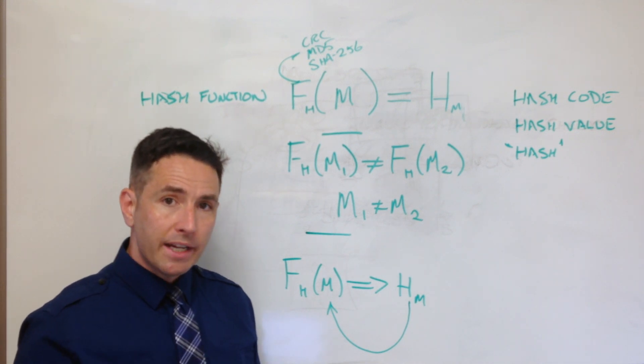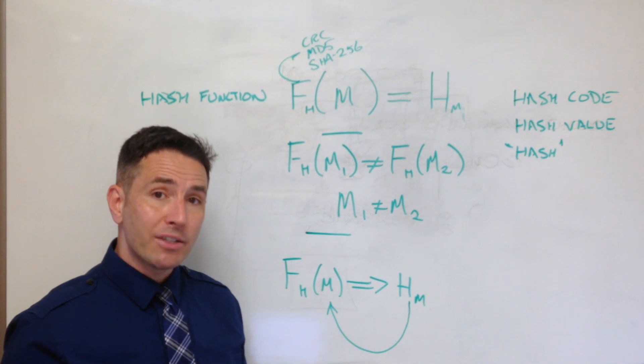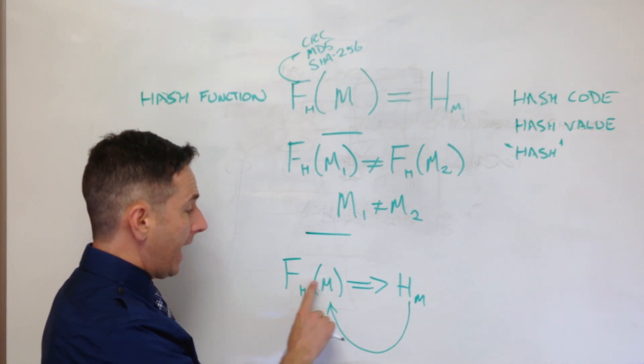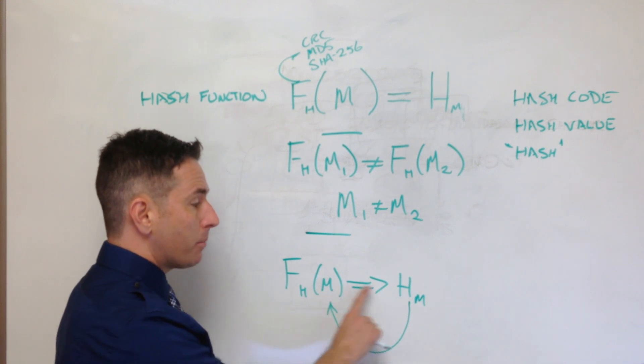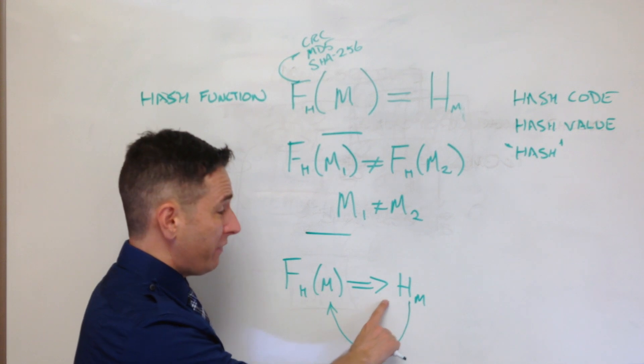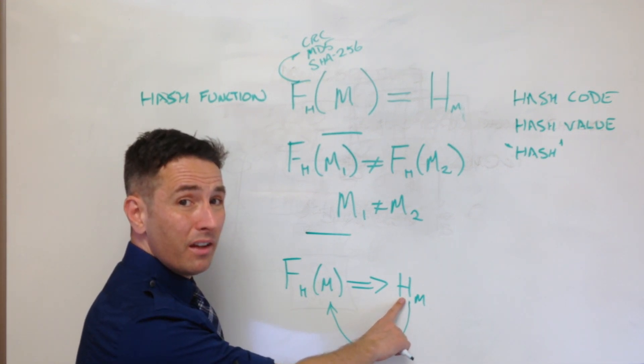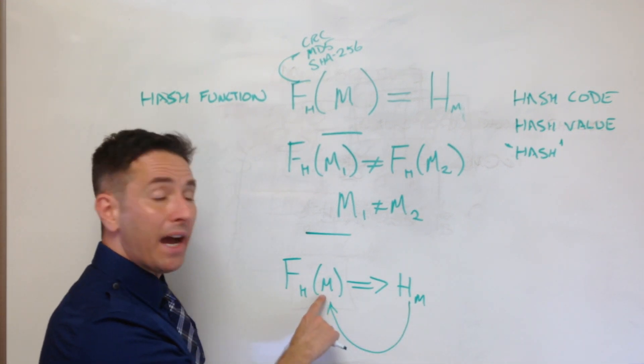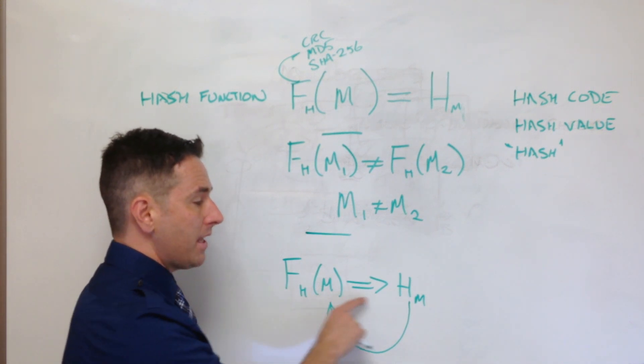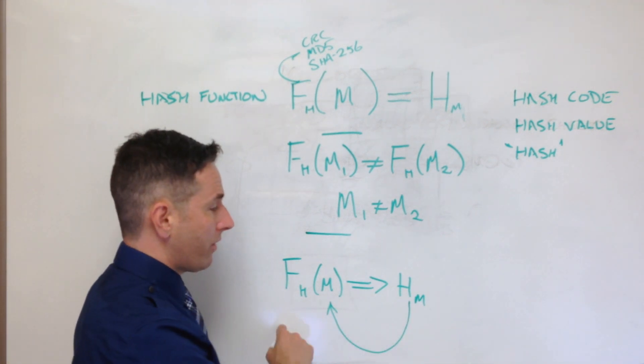You can understand why this would be important if you were using this in a password system. When you use it in a password system, you would take the hash function of your password to produce a fingerprint. And it would be really bad if you could take that fingerprint and calculate somehow what the original password was in the beginning. So you want this to be a function that's very easy to go this way and very hard to go that way.